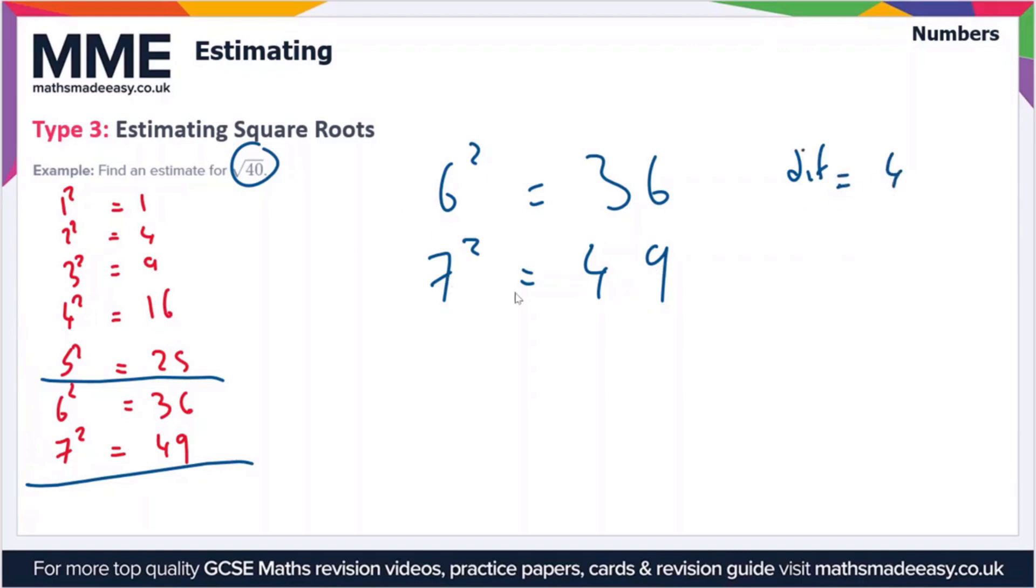The smaller difference is between 36 and 40, so that means the square root of 40 is going to be closer to the square root of 36 than it is to the square root of 49.